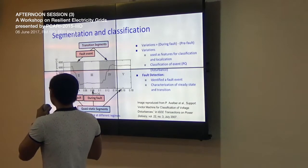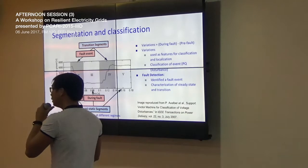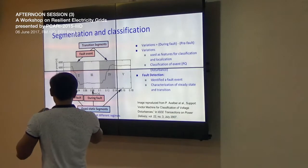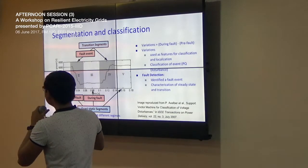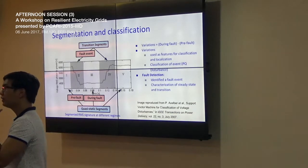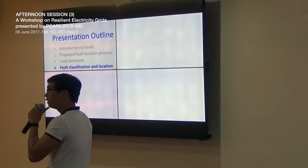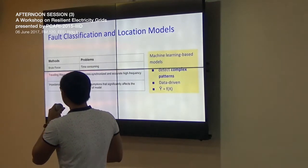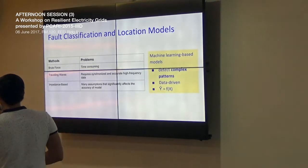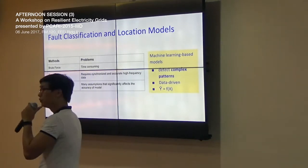Given that we have detected it is a fault, we now acquire the significant information in the waveform. At this point, we have detected the anomaly, determined it is a fault, and acquired the significant information. We pass it to the fault classification and localization block. For an overview, one approach is the brute force method — which is time-consuming. Some methods use traveling waves, requiring synchronized high-frequency data. Impedance-based methods have many assumptions which can affect accuracy.